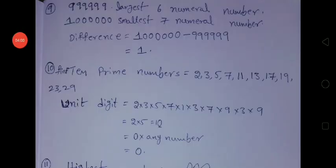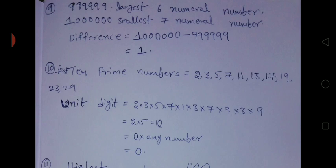Next question: What is the maximum difference between the smallest number formed by 7 numerals and the largest number formed by 6 numerals? This is the largest 6-digit number and the smallest 7-digit number. The largest 6-digit number is 9,99,999 and the smallest 7-digit number is 10 lakhs. The difference is 10 lakhs minus 9,99,999, which equals 1.